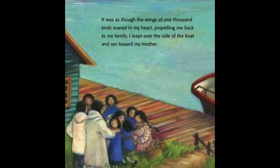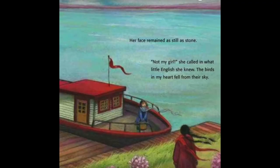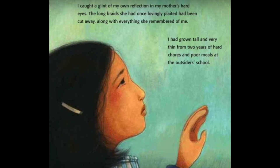It was as though the wings of one thousand birds soared in my heart, propelling me back to my family. I leapt over the side of the boat and ran toward my mother. Her face remained as still as stone. 'Not my girl,' she called in what little English she knew. The birds in my heart fell from their sky. I caught a glint — and glint means a small flash of light — I caught a glint of my own reflection in my mother's hard eyes. The long braids she had once lovingly plated — and plated means to interweave — had been cut away, along with everything she remembered of me.